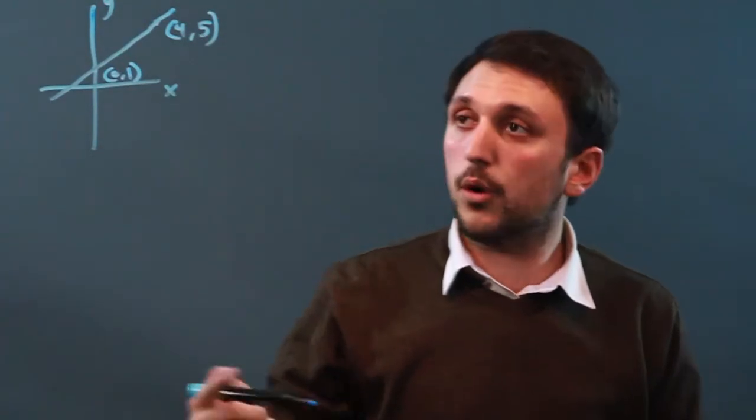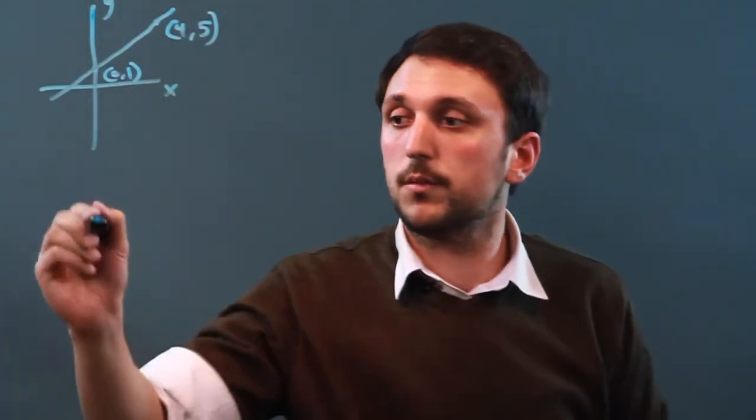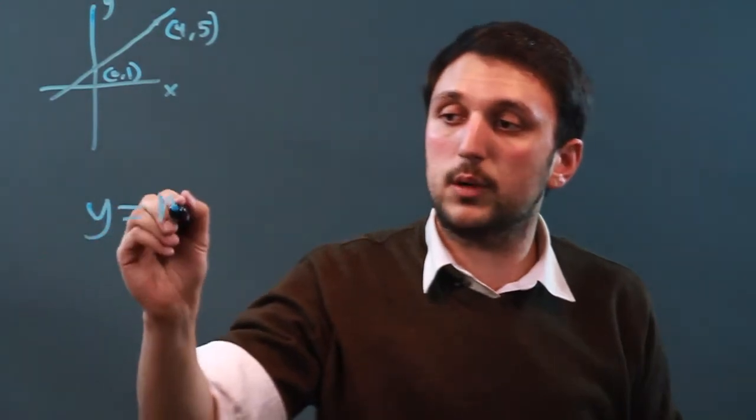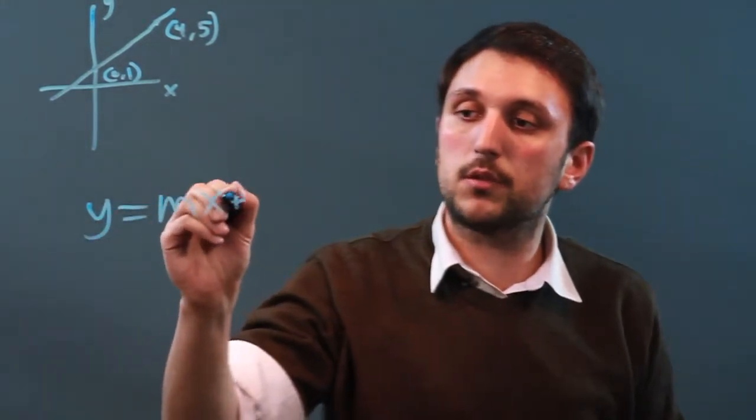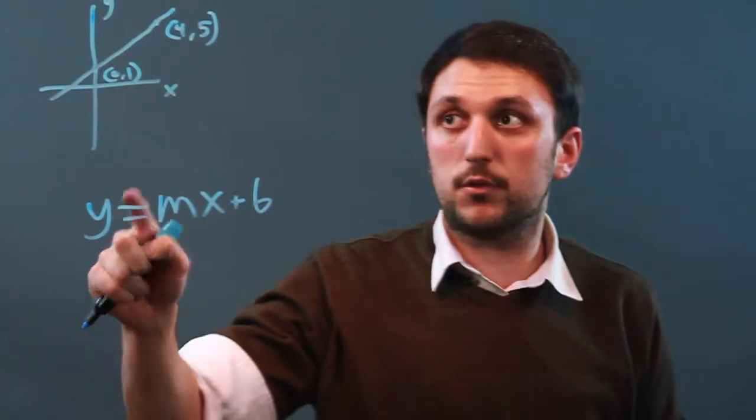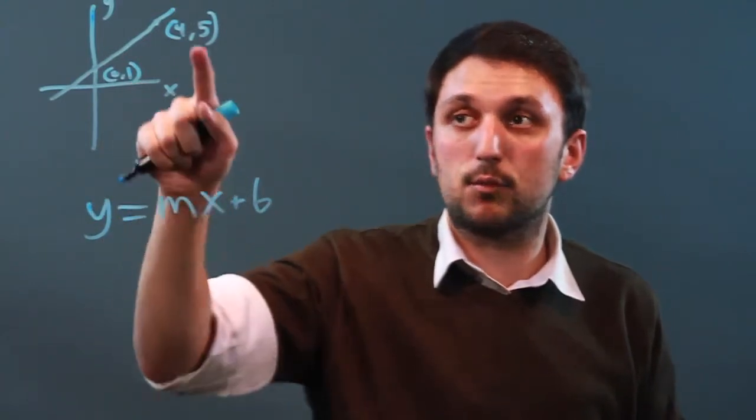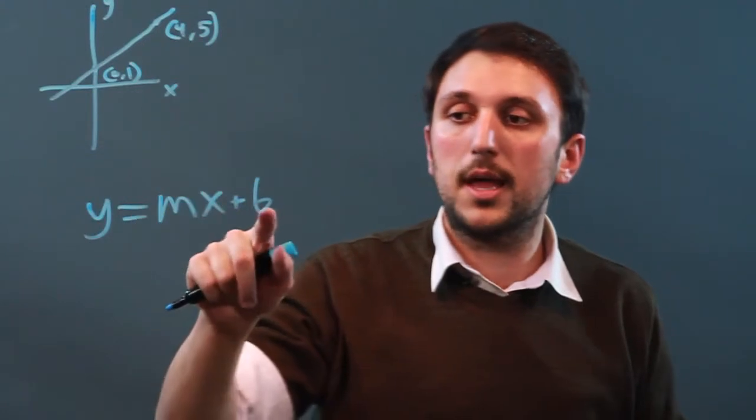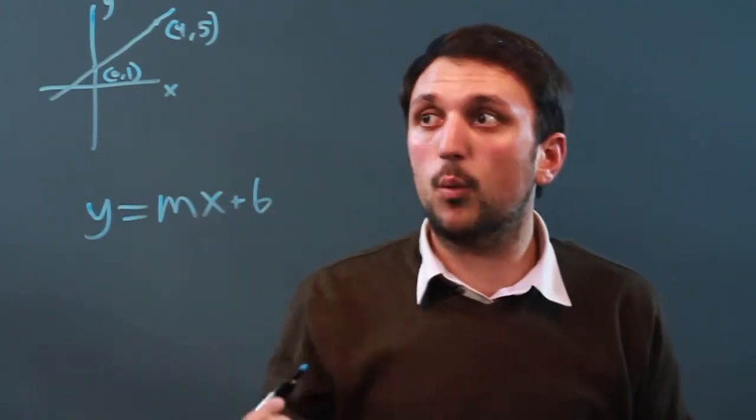Now, in order to find the line, we need three things. The formula, or the equation, is y equals mx plus b. y represents the y coordinate, x represents the x coordinate, m represents the slope, and b represents the y-intercept.